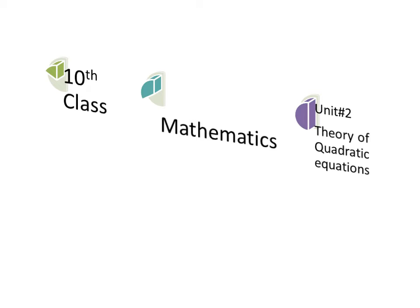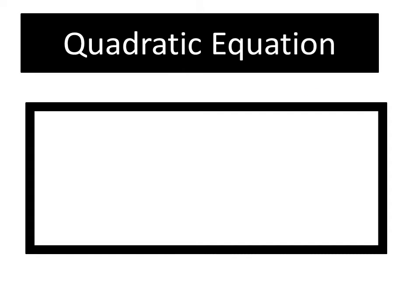Quadratic equations are the equations that contain the square of an unknown variable but no higher power. It means these are equations in which we use one variable, and that variable's highest power must be 2. That's why these equations are called the equations of second degree. For example, ax² + bx + c = 0 is a quadratic equation because it has only one unknown variable x and its highest power is 2. This equation is also called the equation of second degree.